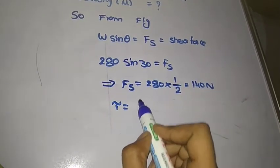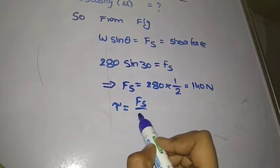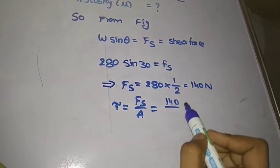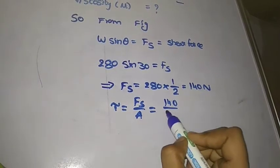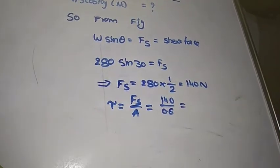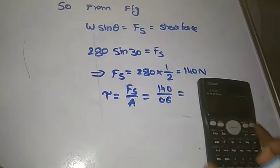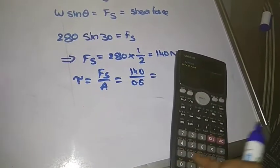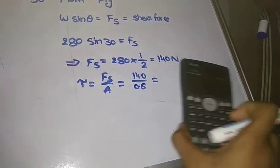We know that τ = Fs/A is the formula for shear stress. That equals 140/0.6 = 233.33 N/m².